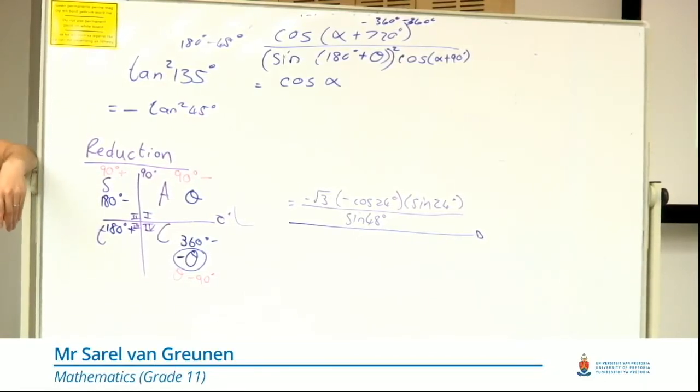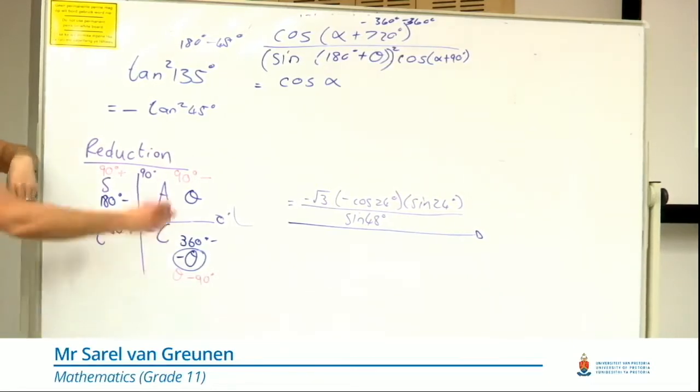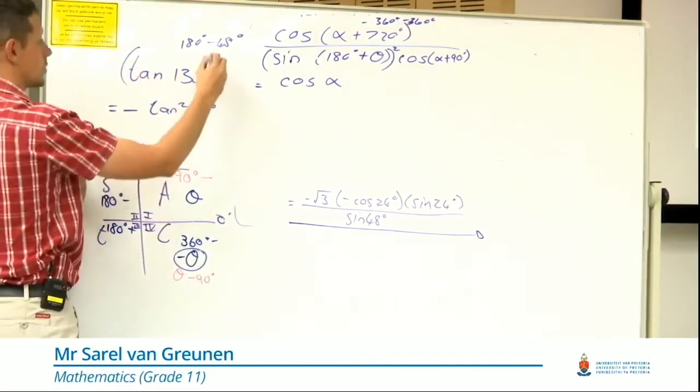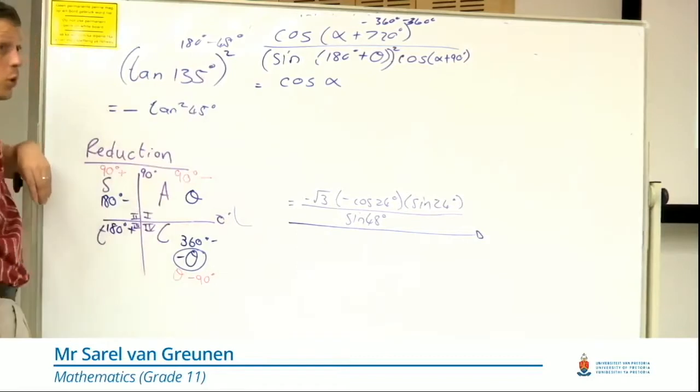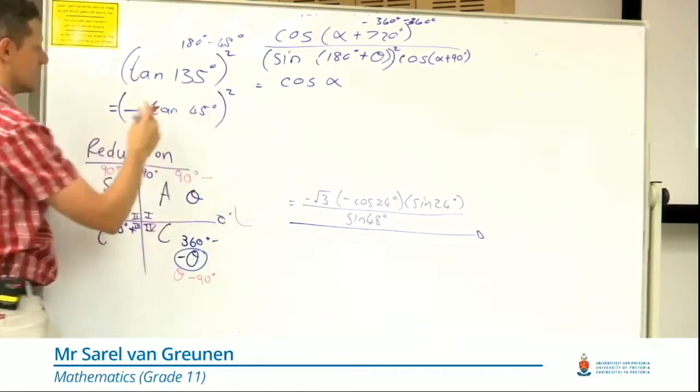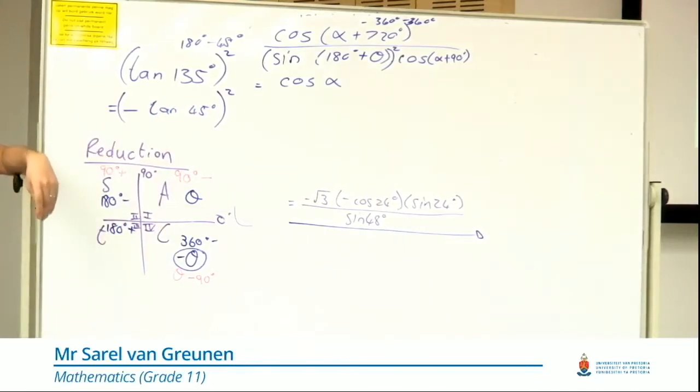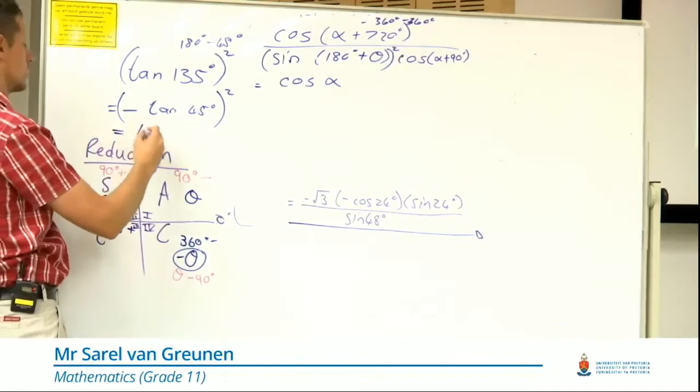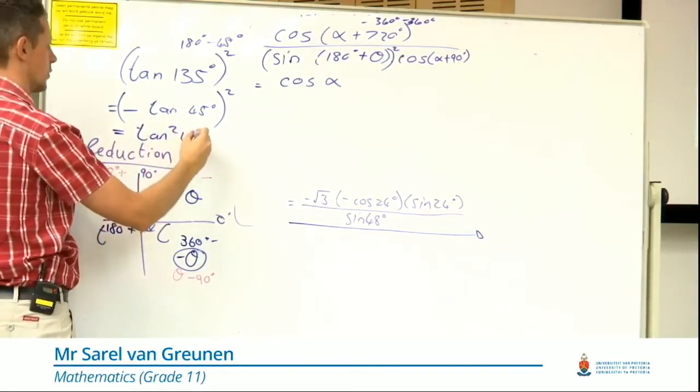Why is it wrong? Because that square actually counts for all, including the negative. So it's actually positive tan squared 45, or just tan squared 45.